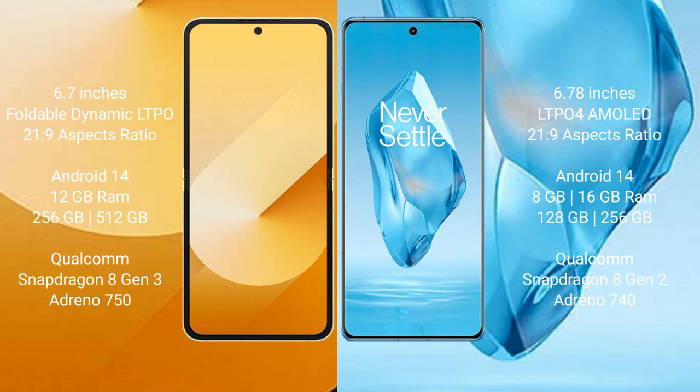OnePlus 12 Power comes with 8GB, 12GB, or 16GB RAM and 128GB or 256GB internal storage, powered by the Qualcomm Snapdragon 8 Gen 2 processor with Adreno 740 GPU.